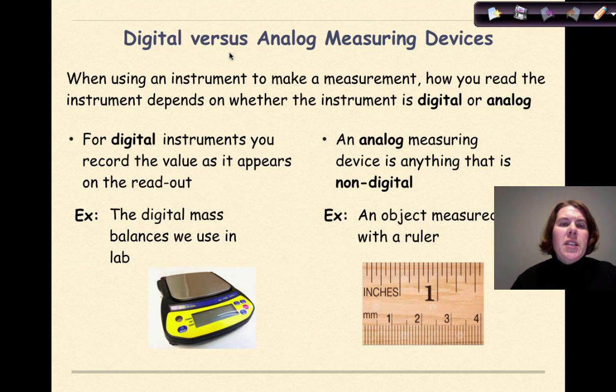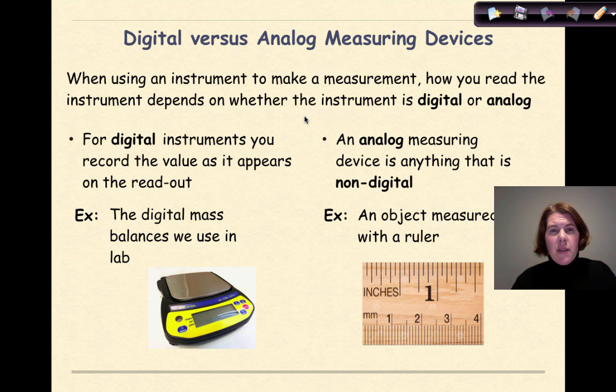Now let's talk about the difference between digital versus analog measuring devices. In this day and age, we work a lot with the digital. We have our smartphones that are typically digital. If we have a watch, it's typically a digital watch. Sometimes in lab we'll use a digital balance. So when using an instrument to make a measurement, how you read the instrument is totally going to depend on whether the instrument is a digital base or an analog base.